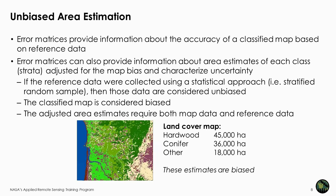For example, 45,000 hectares of hardwood, 36,000 hectares of conifer, and 18,000 hectares of other come from that classified image. If the reference data were collected using a stratified random sampling approach, then those data are considered unbiased. You can use that information to derive unbiased estimates of the areas of each class.